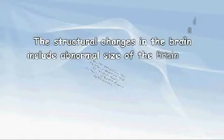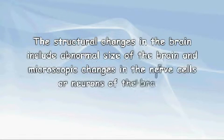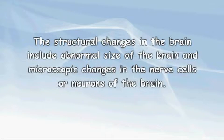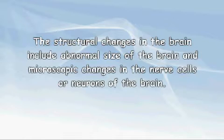The structural changes in the brain include abnormal size of the brain and microscopic changes in the nerve cells or neurons of the brain. There may be more neurons, but the dendrites, or incoming fibers, are often disfigured and do not connect normally with other neurons.